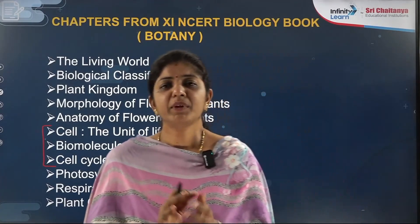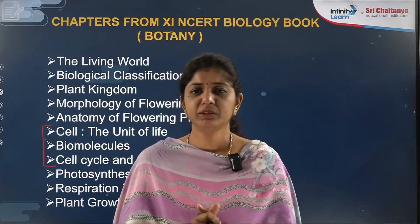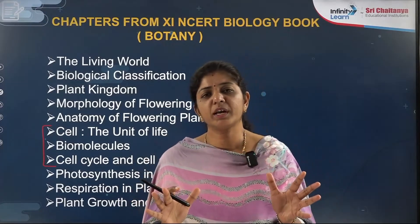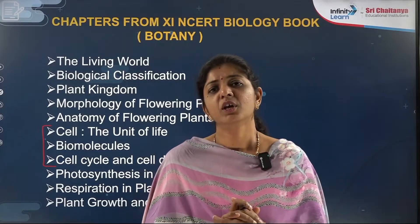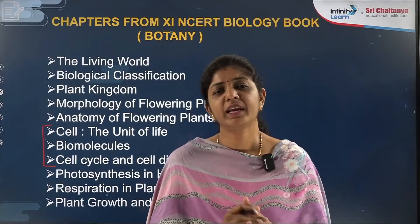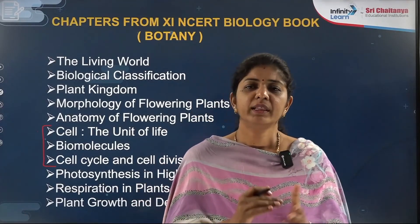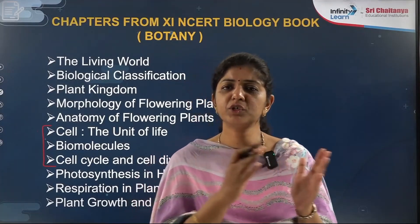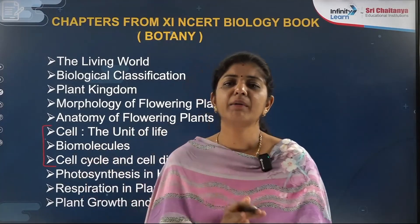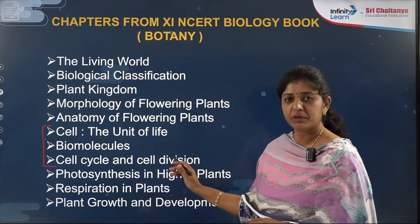Cell Cycle and Cell Division is important from a numerical point of view, as well as conceptually. In tomorrow's session, we will cover how to maximize your score using PYQs. Meiosis is the most important topic here, and it is linked to the Plus Two chapter Sexual Reproduction in Flowering Plants — for example, the megaspore mother cell undergoes meiosis to form megaspores; three degenerate and one functional megaspore gives rise to the embryo sac.